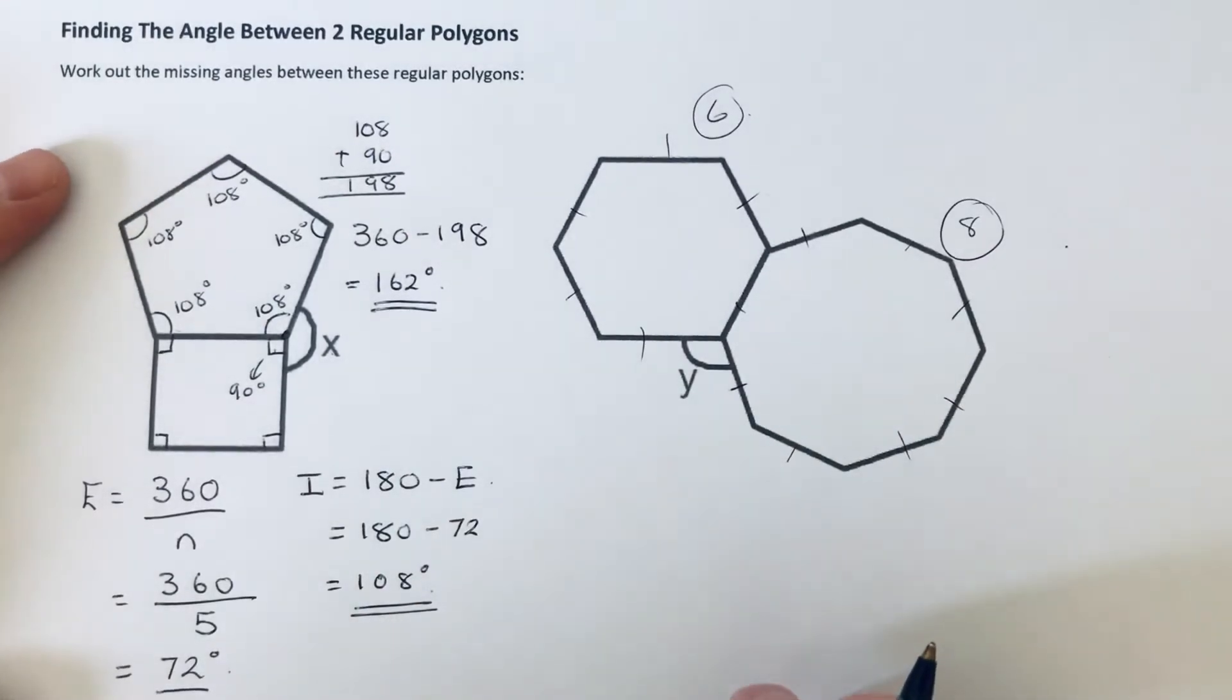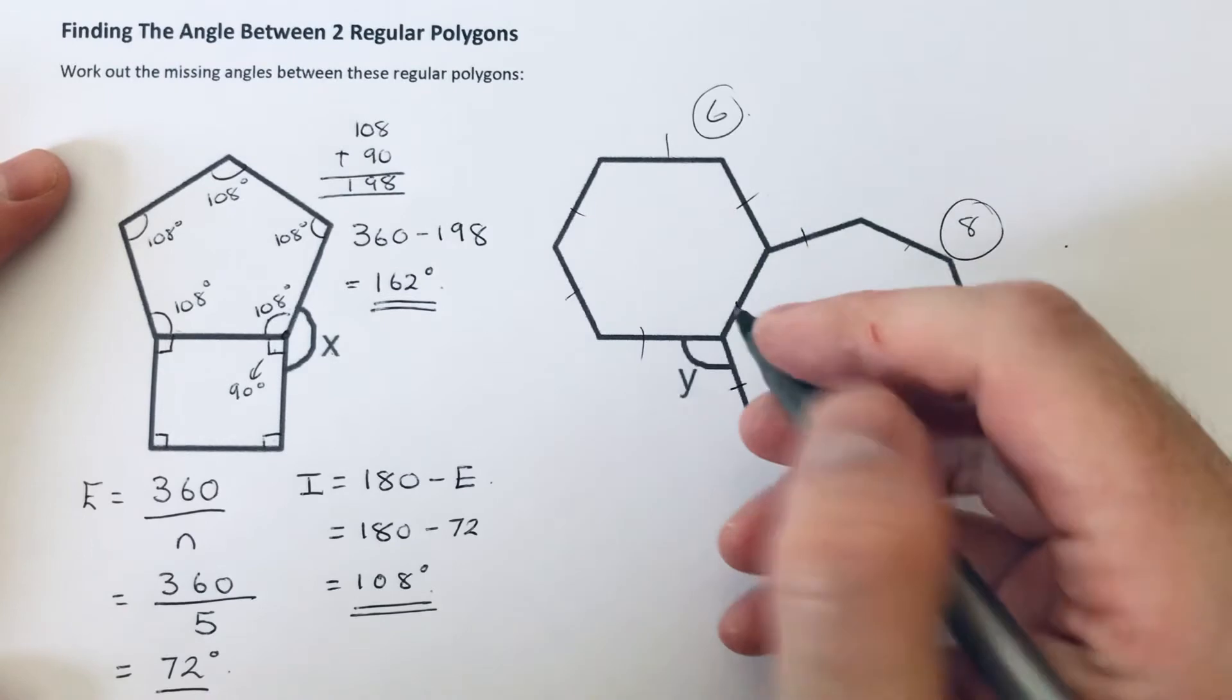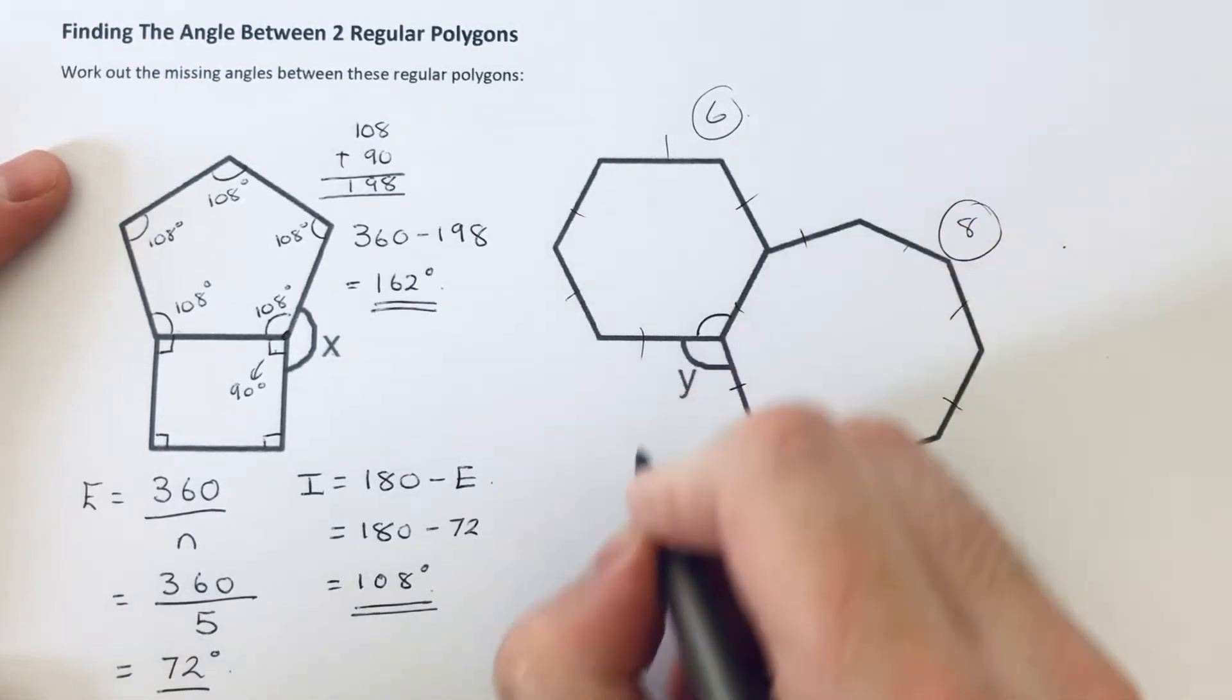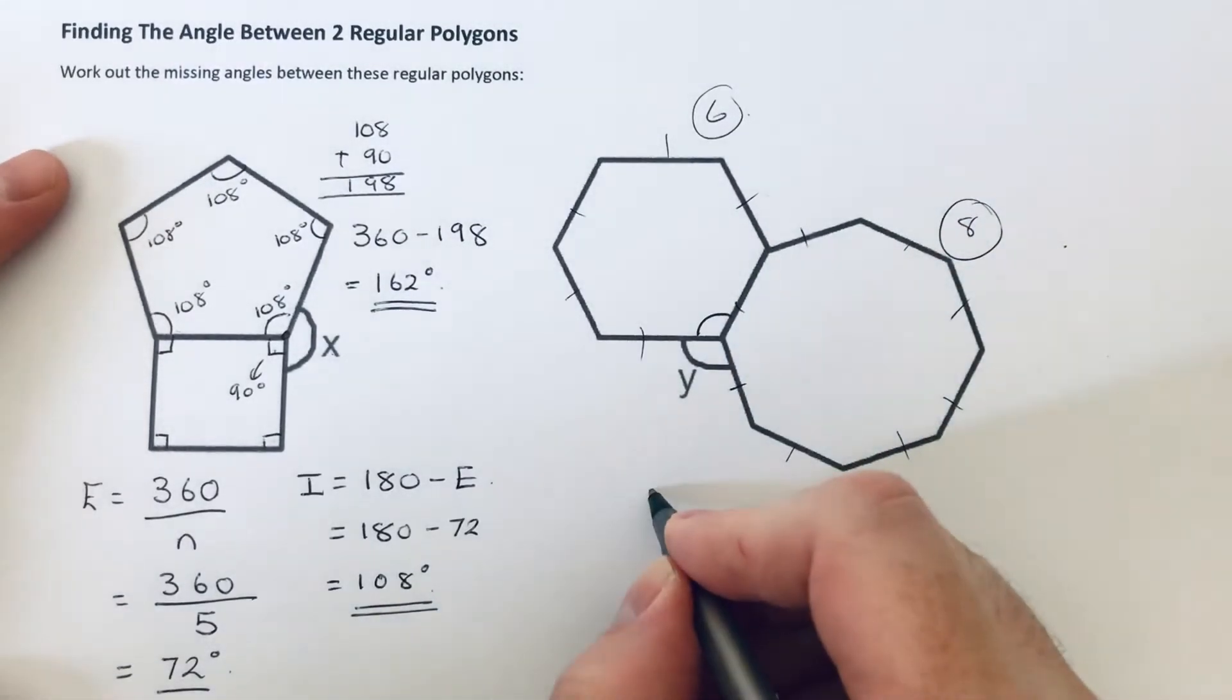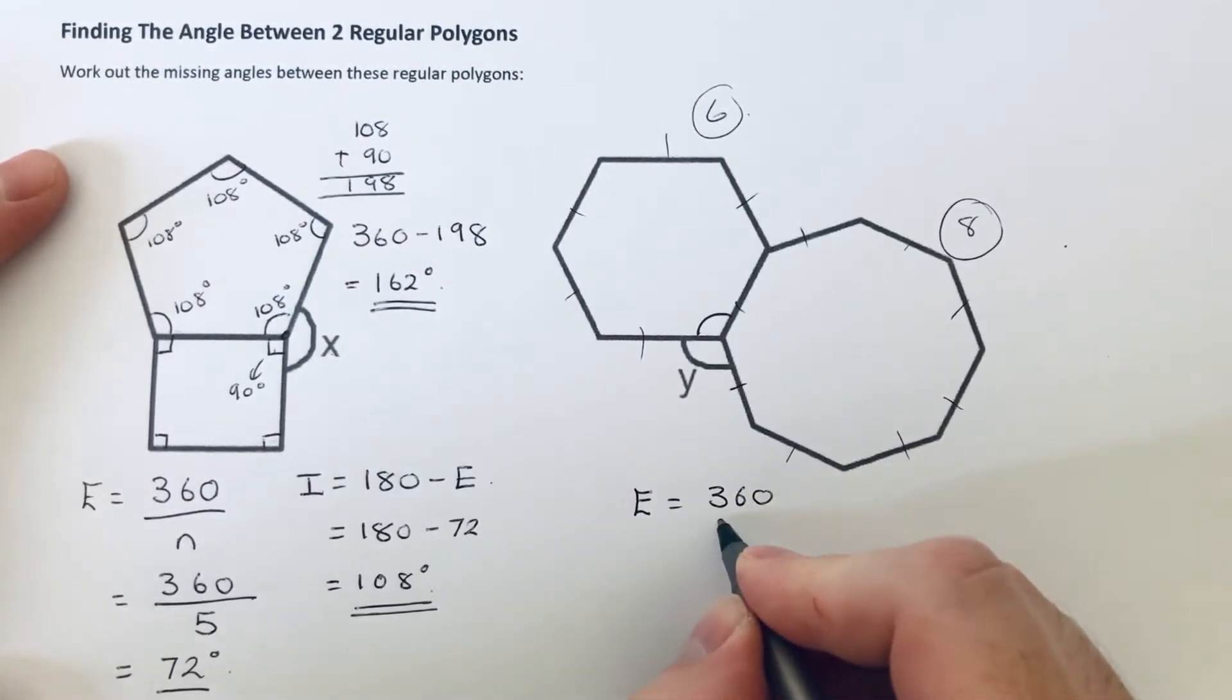Let's just make a note of that. So that's eight sides and this one's got six sides. Okay, so let's start off with our hexagon first of all. So let's work out the interior angle of the hexagon.